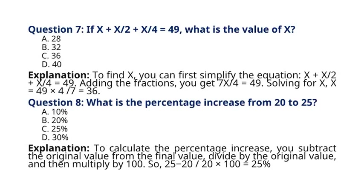Question 7. If X plus X by 2 plus X by 4 is equal to 49, what is the value of X? A. 28. Explanation: To find X, you can first simplify the equation. X plus X by 2 plus X by 4 is equal to 49. Adding the fractions, you get 7X by 4 is equal to 49. Solving for X, X is equal to 49 multiplied by 4 by 7, which is equal to 36. So the correct answer to question 7 is option C. 36.